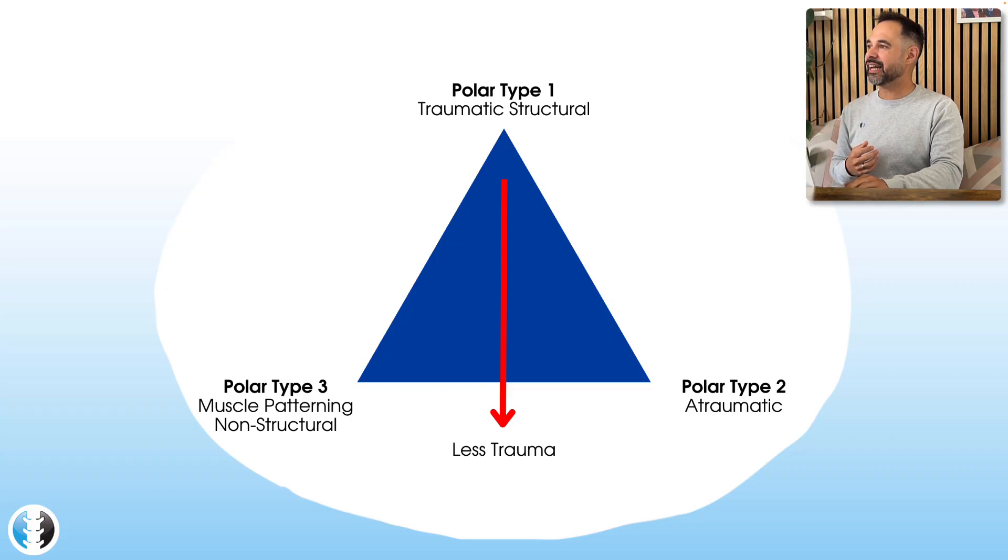Conversely, you'll find the second arrow that the more we get away from type three, the less muscle patterning is a feature of these patient symptoms. So with your type ones and your type twos, there's less of a drive from the muscle patterning that causes their instability.